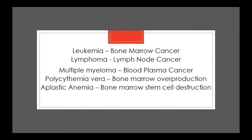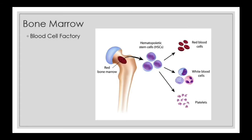We're going to go through five different kinds of bone marrow cancerous disorders. Leukemia is a cancer of the bone marrow. Lymphomas are a cancer of the lymph nodes. Multiple myeloma is a cancer of blood plasma cells that infiltrates into the bone marrow but doesn't originate there. Polycythemia vera is bone marrow overproduction, and aplastic anemia is destruction of the stem cells in the bone marrow.